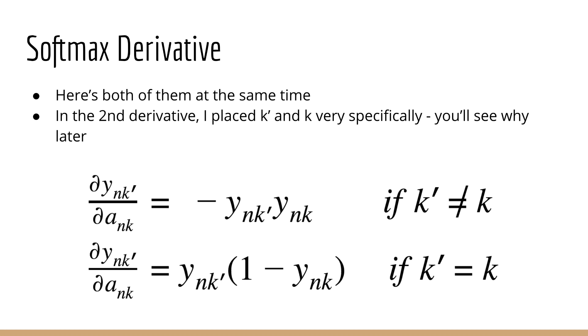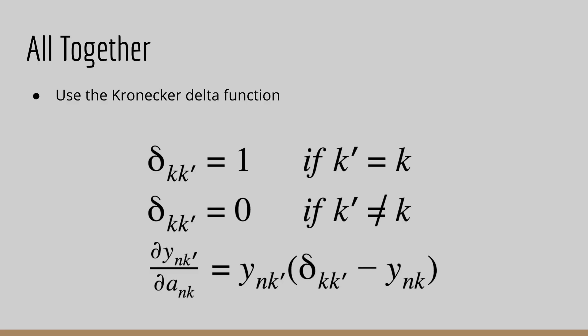The tool we need for this is called the Kronecker Delta. It's a function that simply returns 1 if k prime is equal to k and 0 otherwise. If you can't see right away how this allows us to combine these derivatives together, just try a few examples on paper so you can see how it works.